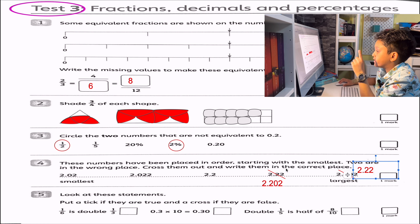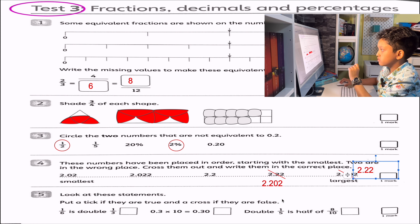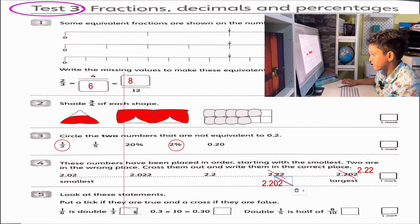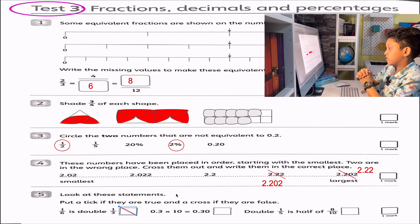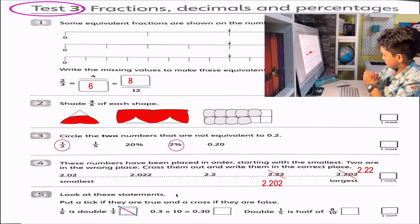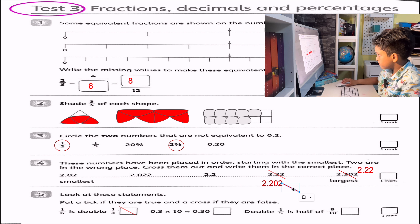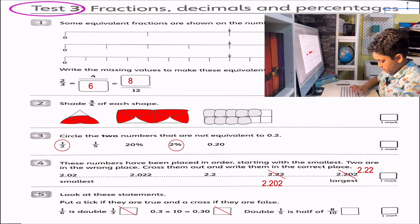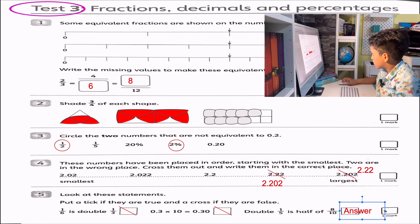Look at these statements — put a tick if they are true and a cross if they are false. So: 1.6 is double of a third? Doubling 1.3 means 1.3 plus 1.3 which is 2.3, and it doesn't give you a sixth — so that's wrong, I put a cross. This one's wrong because 0.3 times 10 is 0.30, so that means this last one is correct.